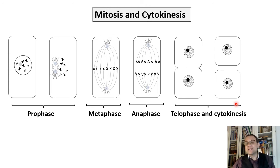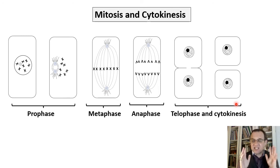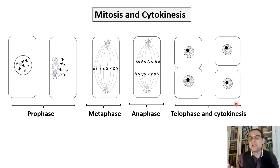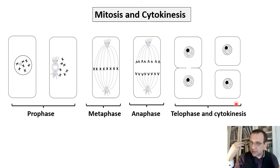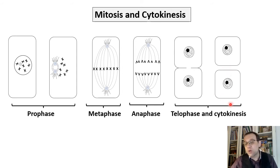The daughter cells are identical to the parent cell — meaning they have exactly the same number of chromosomes. In human cells, that will be 46 chromosomes. So the parent cell had 46 chromosomes, and the daughter cells also have 46 chromosomes. They are identical except in size; the daughter cells are a little smaller but will grow and reach the size of the parent cell eventually.